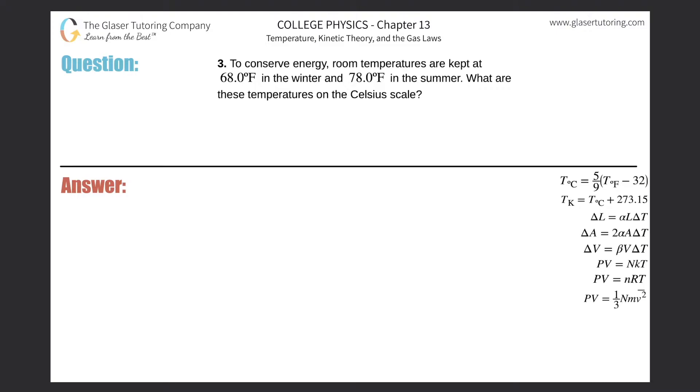Number three. To conserve energy, room temperatures are kept at 68 degrees Fahrenheit in the winter and 78 degrees Fahrenheit in the summer. What are these temperatures on the Celsius scale?